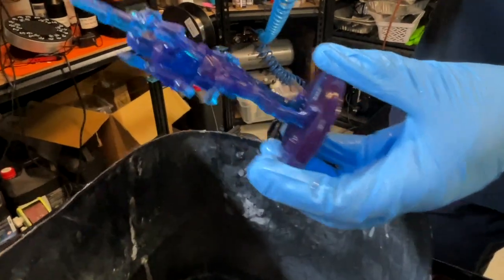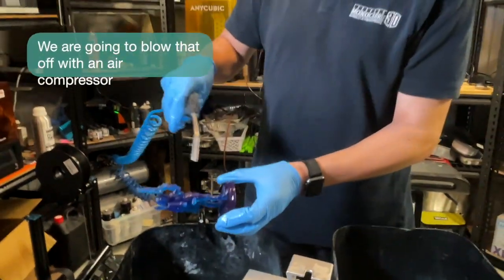So now that we've washed off all the resin away and we've just got water on the surface of the model, we're going to blow that off with an air compressor.